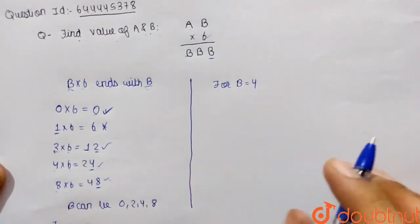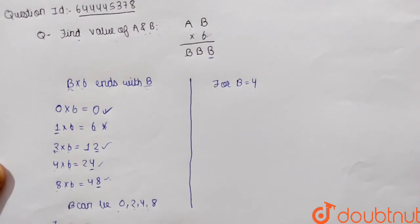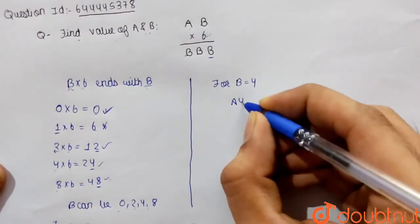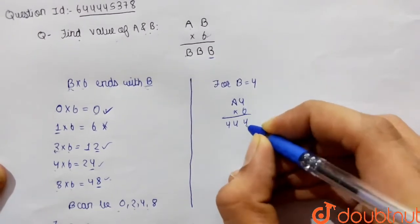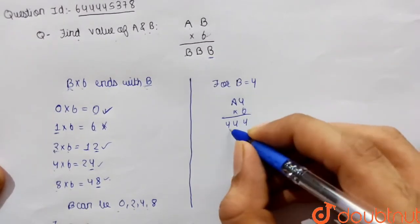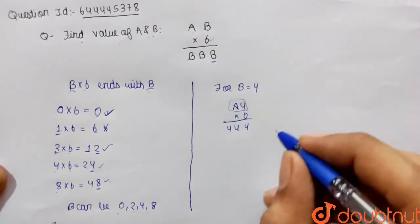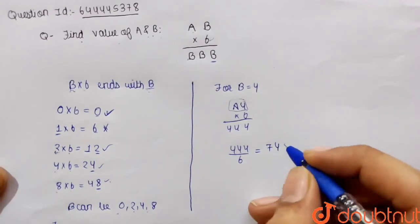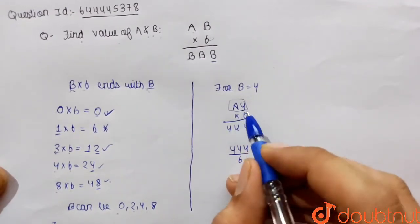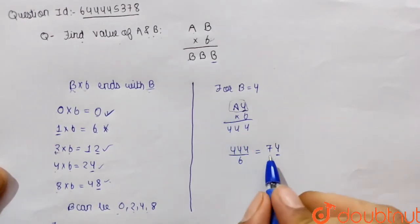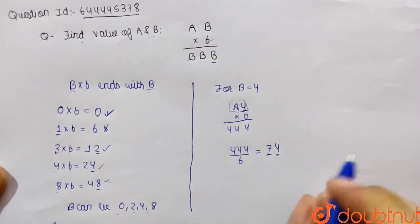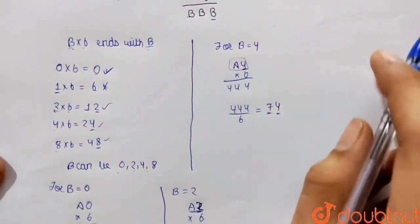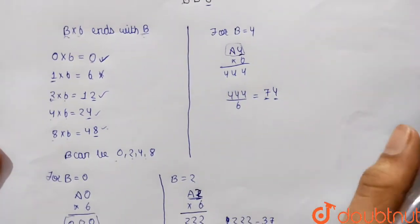Now let's check for b equals 4. The condition becomes A4 multiplied by 6 equals 444. Dividing 444 by 6 gives 74, which has a units digit of 4 — matching b equals 4. So the value of a is 7. Let's verify: 74 multiplied by 6 should equal 444.